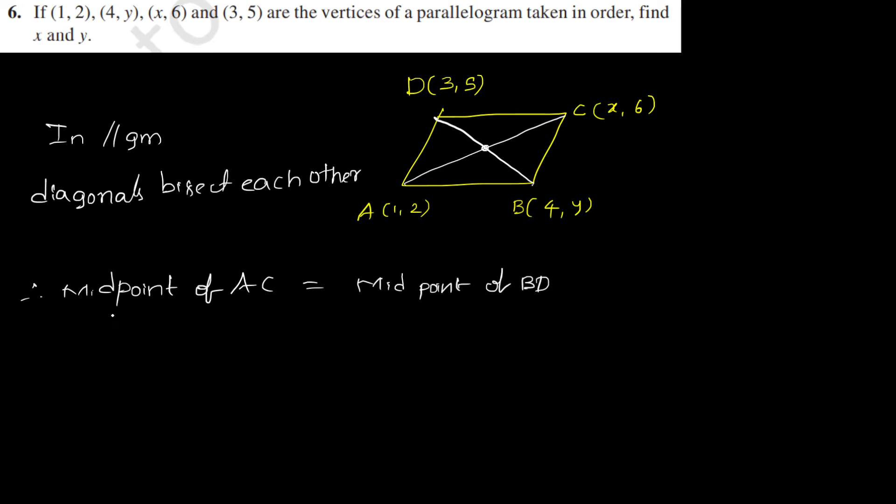Before finding midpoint of AC, first write A and C. A is (1,2) and C is (x,6). Similarly, B is (4,y) and D is (3,5). So the midpoint formula is (x₁+x₂)/2, (y₁+y₂)/2. That means (1+x)/2, (2+6)/2 equals (4+3)/2, (y+5)/2.